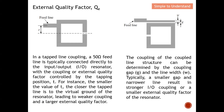For the coupled line structure, the coupling is determined by the coupling gap g and the line width w. Typically, a smaller gap and narrower line result in stronger input and output coupling, or a smaller external quality factor of the resonator. So if we want stronger coupling, g needs to be as small as possible and the width of the coupled line also needs to be as small as possible, which leads to a smaller Qe.